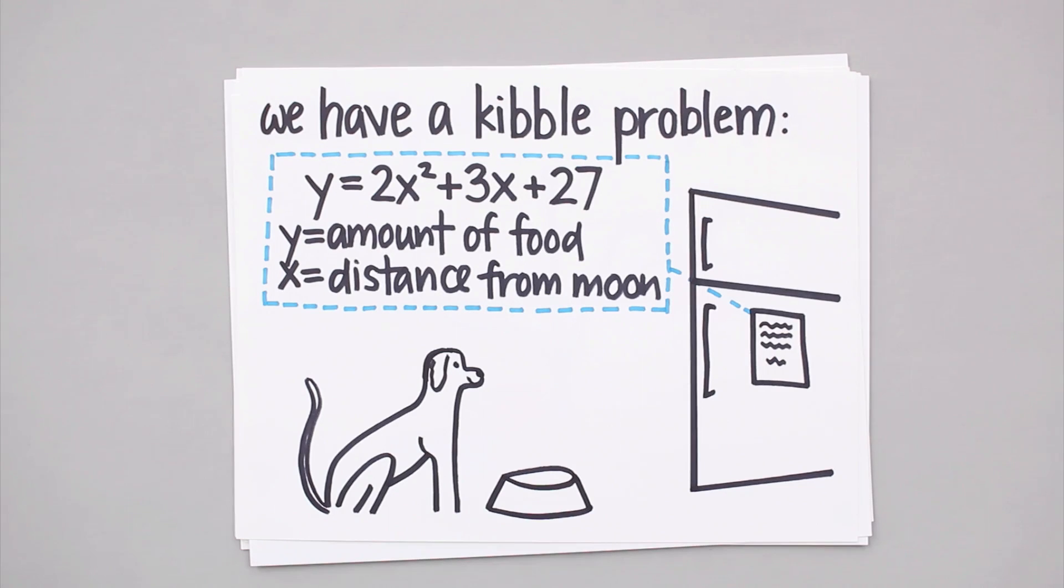That way, we don't overfeed the dog, but we also keep it alive. Well, we know that the minimum of the function will be a critical point. And we know that we find critical points anywhere where the derivative is either zero or does not exist.